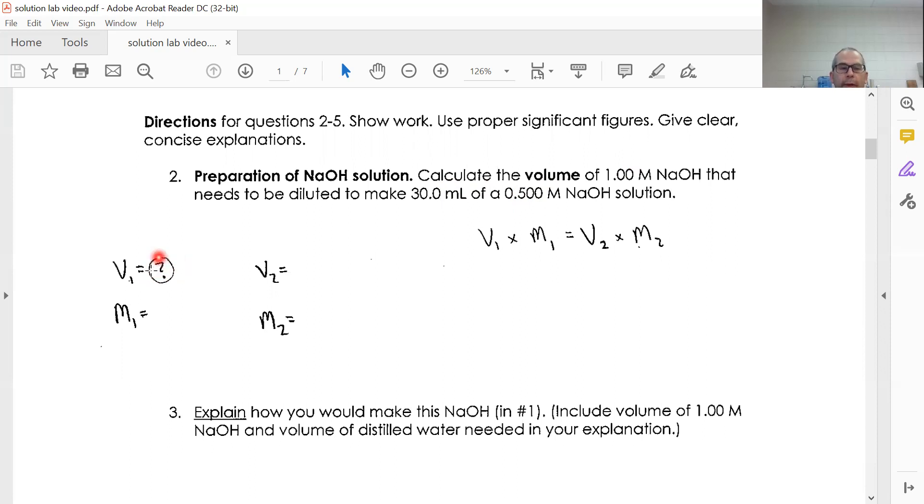So I have a starting volume, and I have a starting molarity, and then I'm going to dilute it. So my final volume and molarity are these numbers right here. So you got to figure out what that volume is, or how much one molar stuff I'm going to use. Because it's more concentrated, I'm going to expect a number smaller than 30. Less milliliters of something more concentrated will balance more milliliters of something less concentrated.